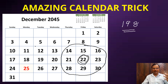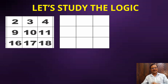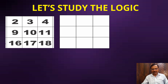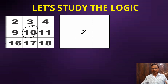Enough of confusion and surprises — let's study the logic behind this. Here I've taken a block from a random calendar: 2, 3, 4, 9, 10, 11, 16, 17, 18. The middle number is 10. For simplicity, I'm considering this middle number as X. I want to find the sum of these numbers, knowing only the middle number. So I assume the middle number is X, and let's see whether we can express the remaining eight numbers in terms of X.